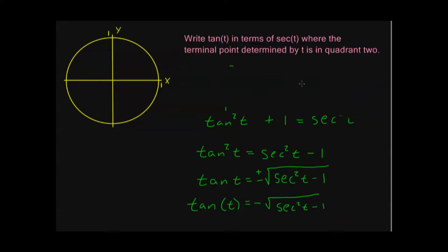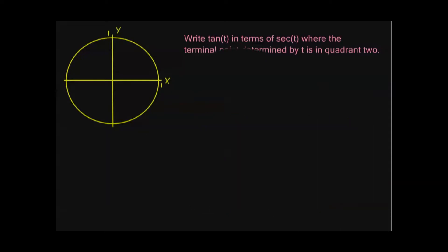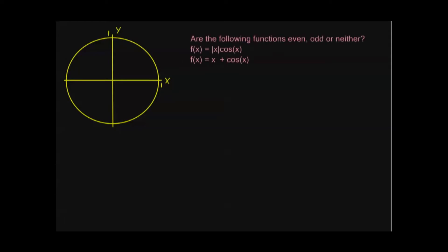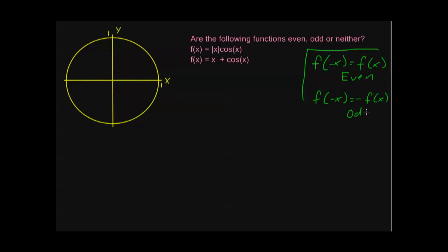And one more sample problem, which should cover most of the remaining homework. This deals with even and odd functions. The question says: are the following functions even, odd, or neither? Quick review: if f of negative x equals positive f of x, the function is even; if f of negative x equals negative f of x, the function is odd. Not all functions are even or odd — some are neither. We check by plugging negative x into the argument and looking at f of negative x.